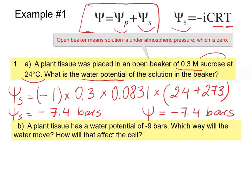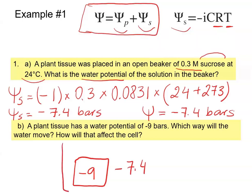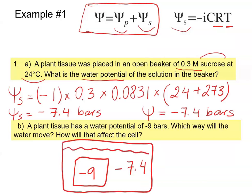The second question: a plant tissue has a water potential of negative 9 bars. We need to determine which way the water will move and how that will affect the cell. I'm going to draw a plant cell here to help you visualize this — the cell is at negative 9 bars, and the solution in the beaker is at negative 7.4 bars.